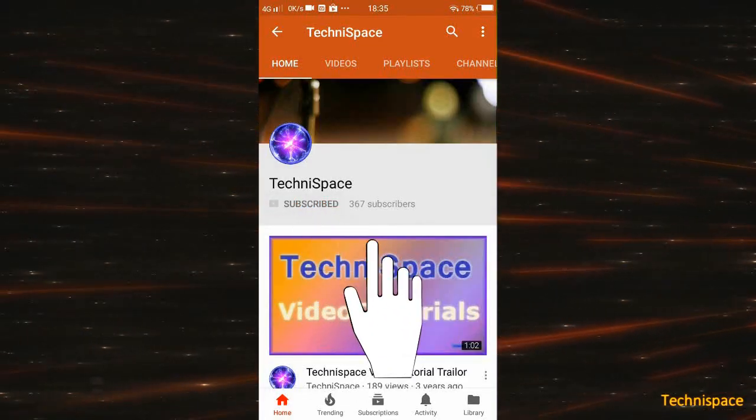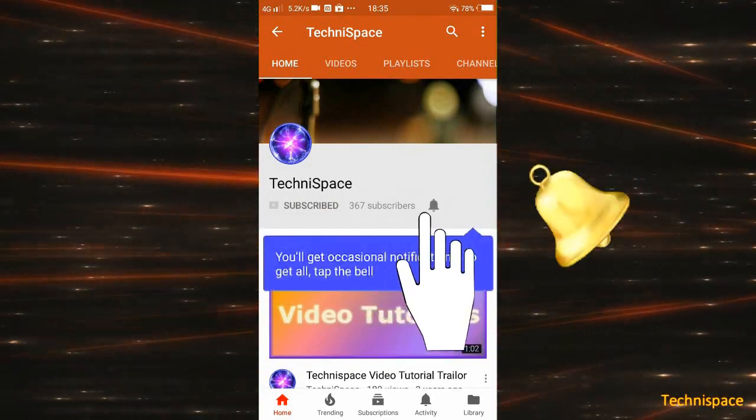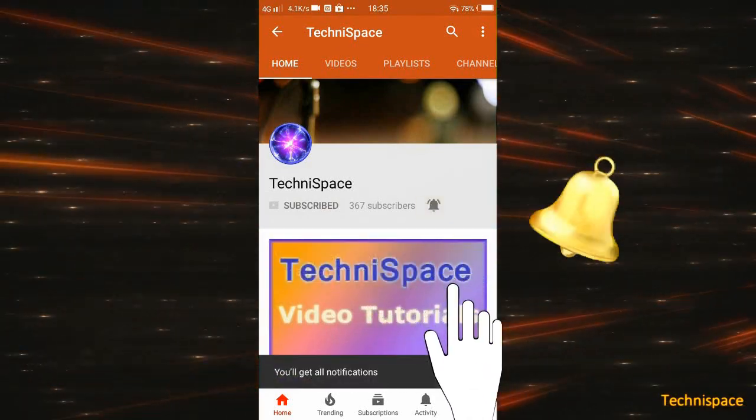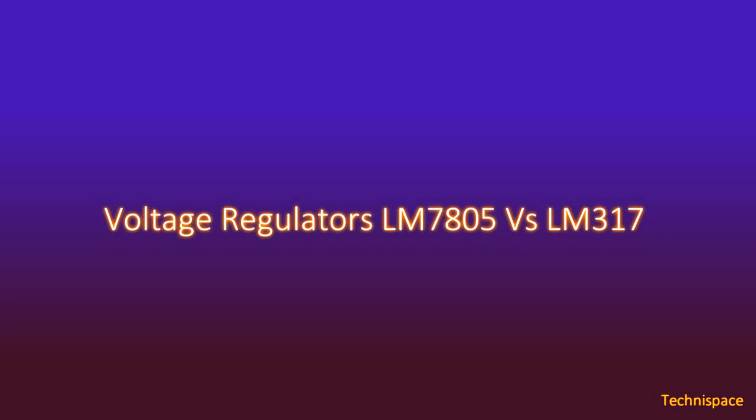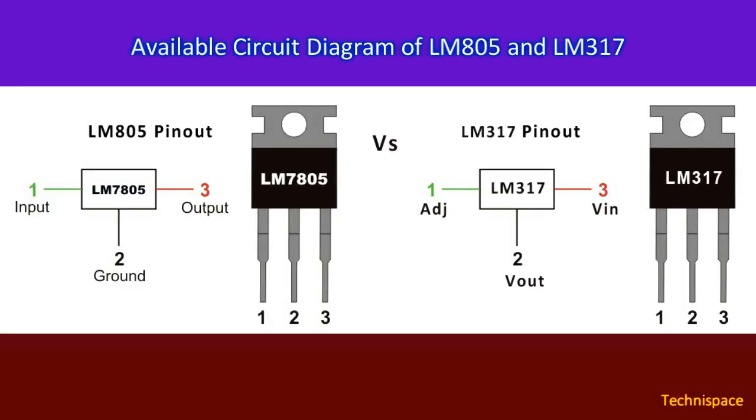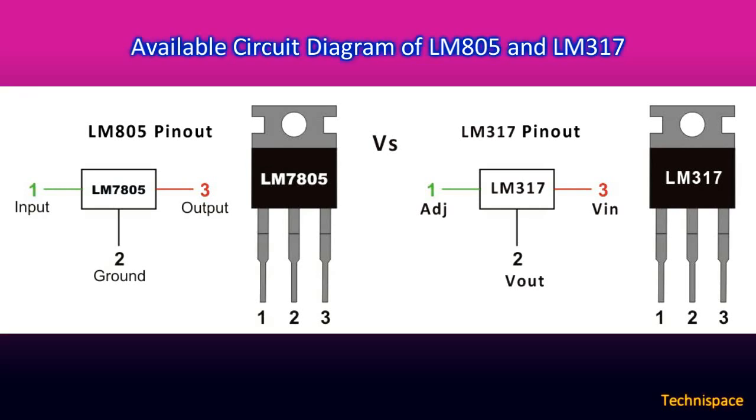Subscribe to our channel and press the bell icon to get early notification of our latest video. Hi friends, in today's video we will know about two types of voltage regulators. One is 7805 IC voltage regulator of 78 series family of linear voltage regulators.